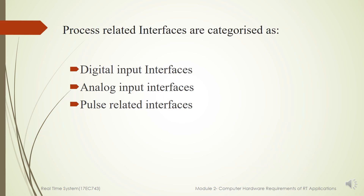We have several process-related interfaces with different quantities like Analog, Digital, Pulse, and Telemetric quantities, which can be categorized into three sections. The first category is Digital Input Interface, Analog Input Interface, and Pulse-related Interfaces.